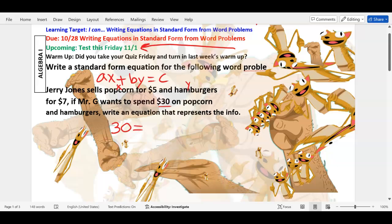We're gonna have our AX plus BY. Popcorn is five dollars, so you put the value in front of the variable: five dollars times X for popcorn, plus seven dollars times Y for hamburgers. Five per popcorn, seven per hamburger. That's standard form.